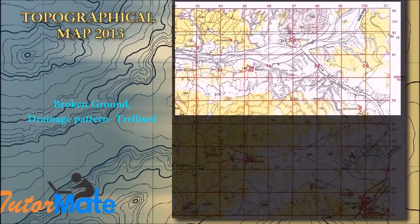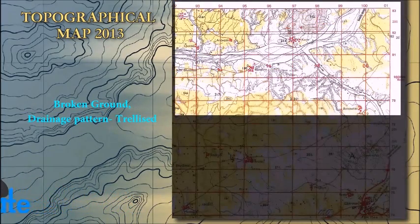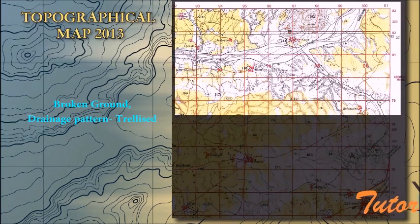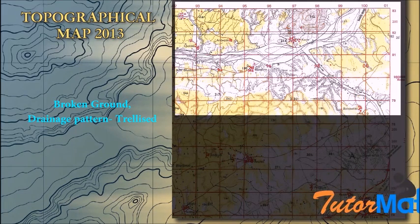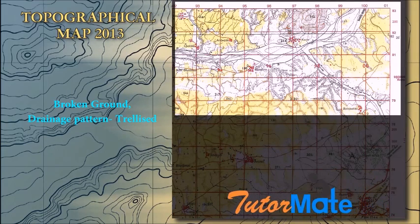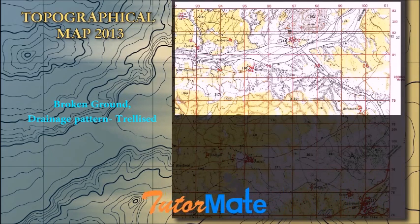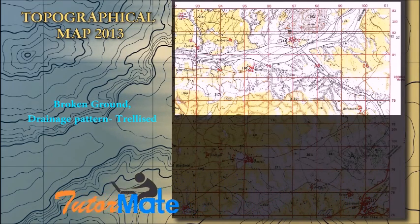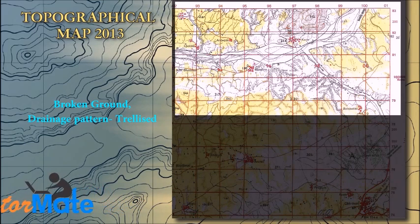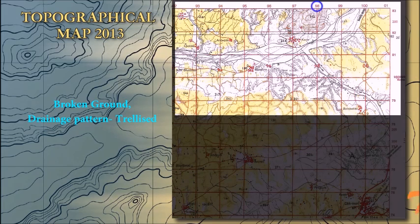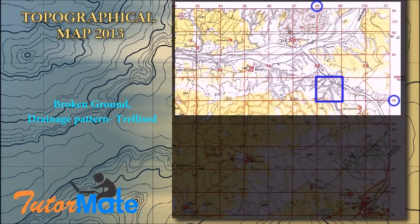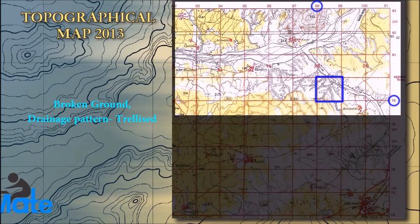The next question: mention a special feature associated with streams in grid square 9879, and name the type of drainage pattern found in grid square 9382. There are two sub-questions here. First, the special feature associated with grid square 9879 — you can see that the answer is broken ground.